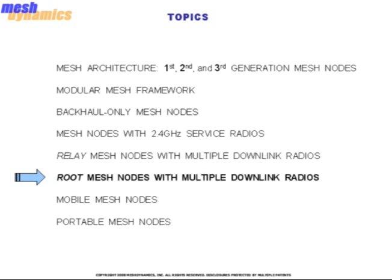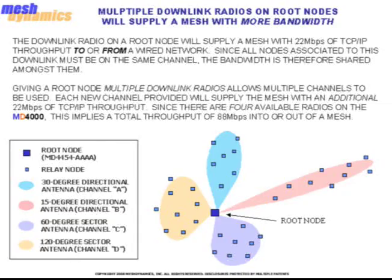Next, we talk about root nodes with multiple downlink radios. Root nodes are nodes that have a wired connection to the internet or network. Given the upper limit of the 802.11a or g protocol, the single downlink radio on a root node will supply a mesh with a maximum of 22 Mbps of TCP throughput to or from a wired network. Since all nodes associated to this downlink must be on the same channel, the bandwidth is shared amongst them. Giving a root node multiple downlink radios allows multiple channels to be used, with each new channel supplying an additional 22 Mbps. Since there are four available radio slots on the MD-4000, this implies a total throughput of 88 Mbps into or out of a Mesh Dynamics mesh network.